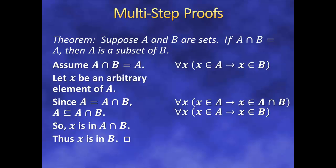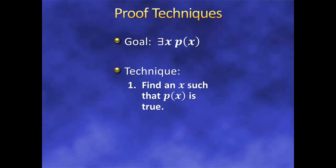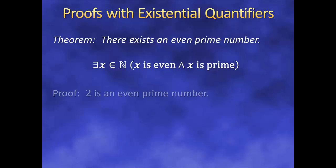So let's move on to existential quantifiers. Suppose we are confronted with something of the form: there exists an x such that p(x) is true. How do we prove this? Remember that for a statement involving an existential quantifier to be true, we only need one x that satisfies the condition p(x). So all we need to do is find one. Let's look at an easy example: there exists an even prime number. Under the hood this says: there exists an x in the natural numbers such that x is even and x is a prime number. So all we need to do is find an even prime — 2 is an even prime number. So we're done. We've found something that works, so our proof is over.